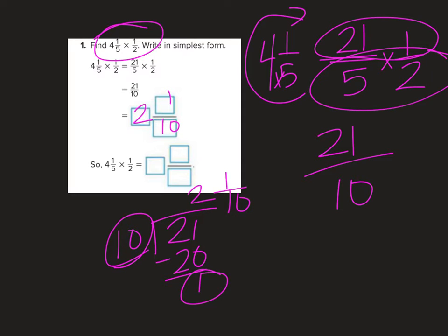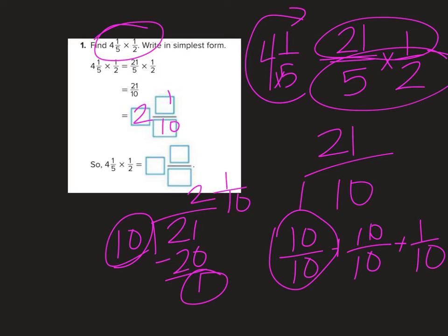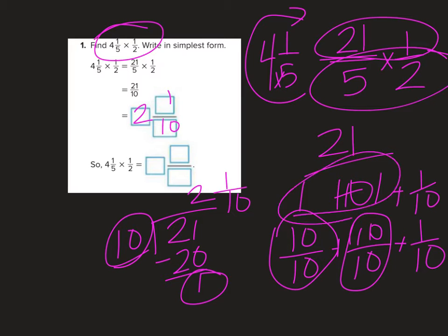Remember the other option is to break it apart and do ten-tenths plus ten-tenths plus one-tenth. I know that ten-tenths is worth one, and ten-tenths is worth one. So I have one plus one plus one-tenth, or two and one-tenth. Two and one-tenth is my answer.